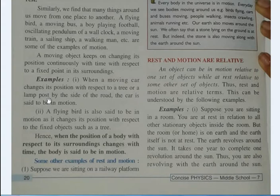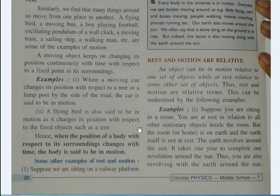For example, a moving car changes its position with respect to a tree or a lamp post by the side of the road — the car is said to be in motion. The lamp post is fixed, and as the car moves beside it, the car's position changes with respect to that surrounding. A flying bird is also said to be in motion as it changes its position with respect to a fixed object such as a tree.